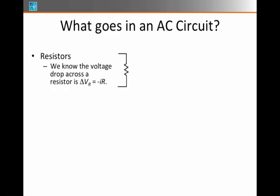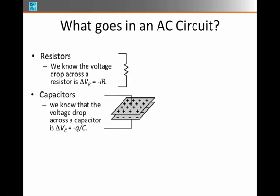So what goes into an AC circuit? Circuits have resistors, and so every time there's a resistor and a current flowing through it, of course there's a voltage drop through the resistor given by IR.